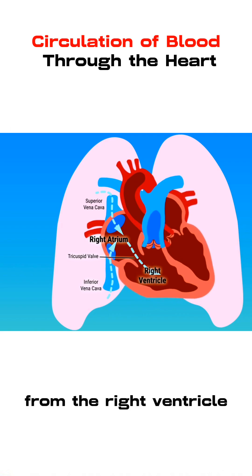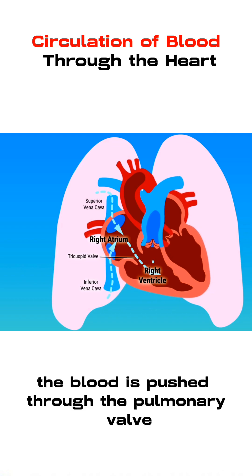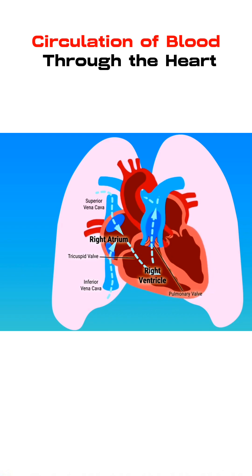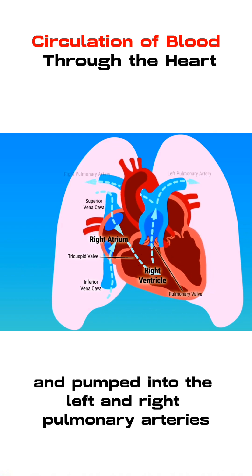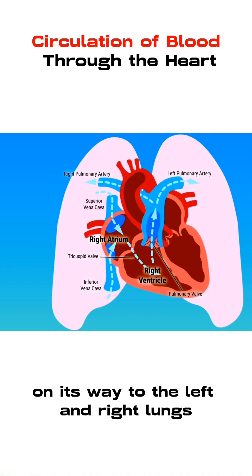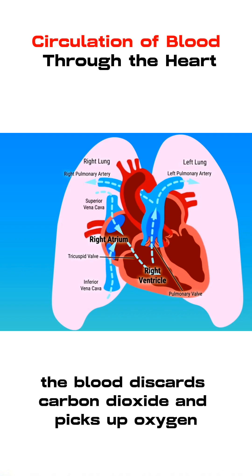From the right ventricle, the blood is pushed through the pulmonary valve and pumped into the left and right pulmonary arteries on its way to the left and right lungs. There, the blood discards carbon dioxide and picks up oxygen.